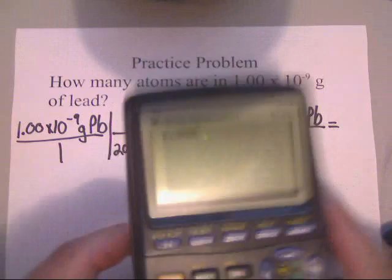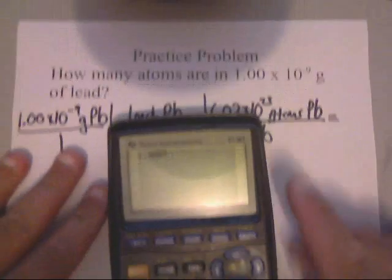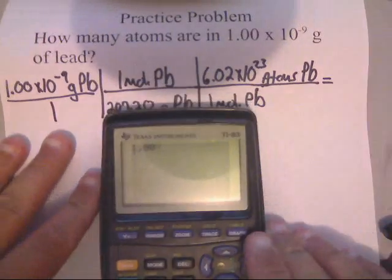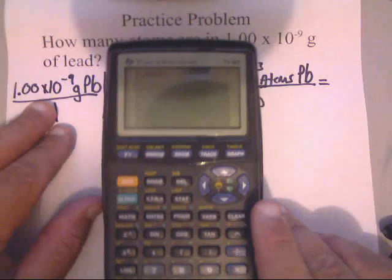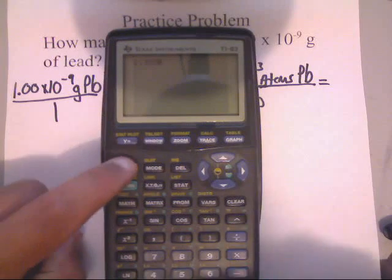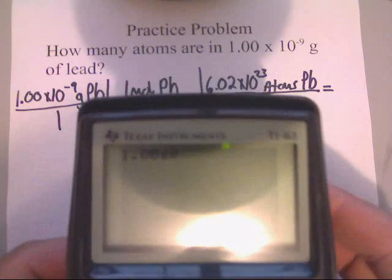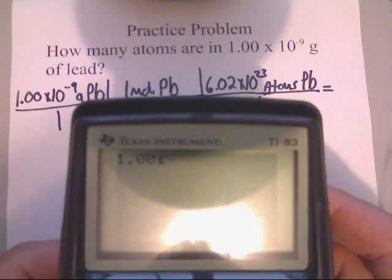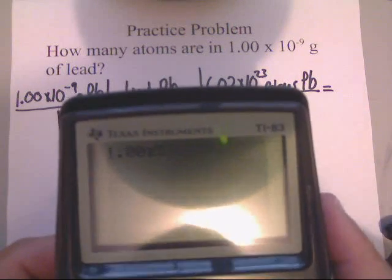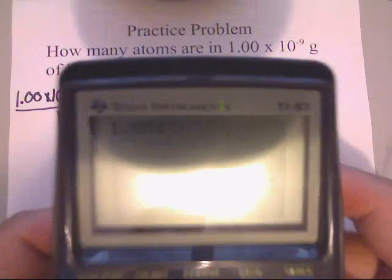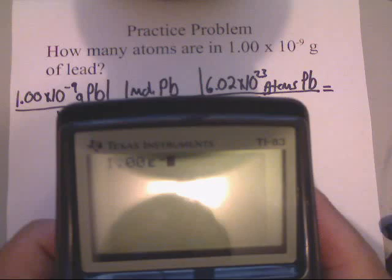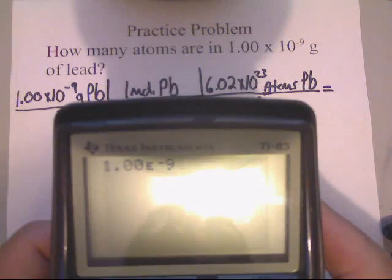Now, you've got to punch in 1.00. Do y'all see that? 1.00. Now, to do this times 10 thing, what you need to do is on your calculator, you need to hit second comma. And, if you notice, it puts an E on there. Like a capital E. Now, to type in negative 9, you hit the negative sign, which is down by the enter sign, which is right there. There's the negative sign. So, that'll be negative. Do y'all see that? Negative 9. So, you're done with that.